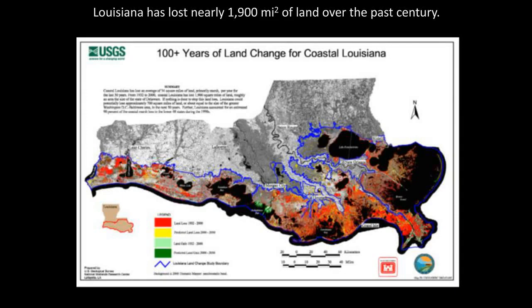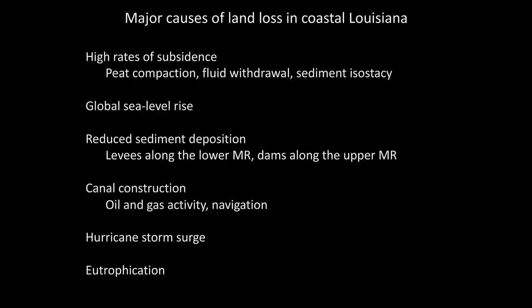The area has lost a tremendous amount of land — something on the order of 1,900 square miles, about 4,500 square kilometers, over the past century. People often talk about that in terms of a football field per hour. It's enough land that if all that land loss were concentrated in the state of Delaware, we'd have 49 states rather than 50. Given the importance of the Delta in terms of transportation, commerce, infrastructure, seafood production, and ecological value, this land loss is not trivial — it is a major issue of practical importance.